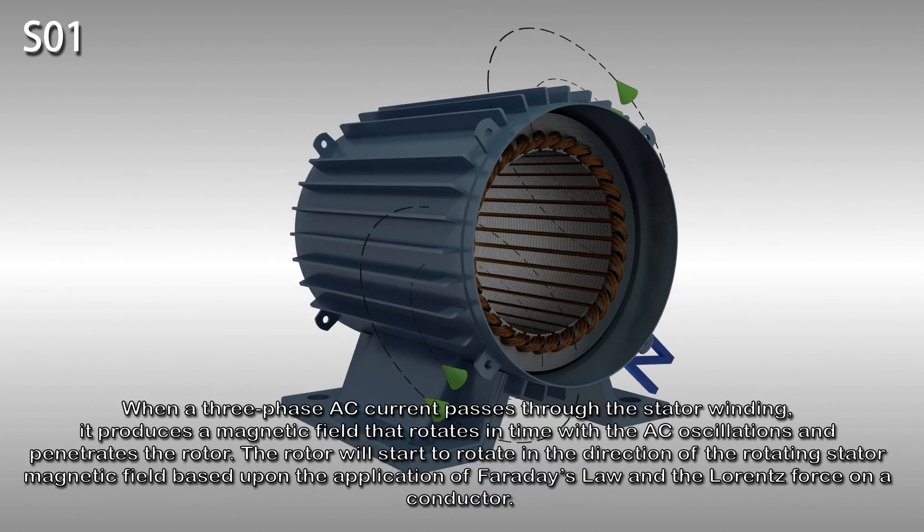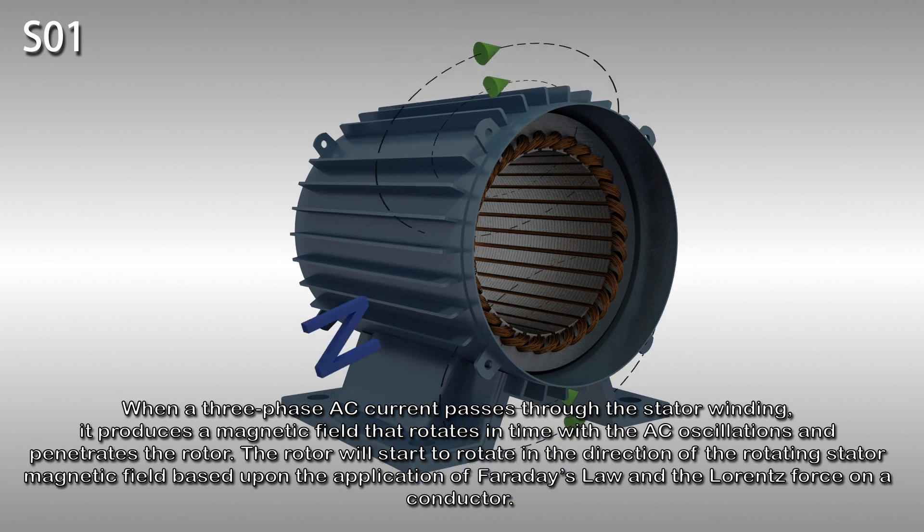When a three-phase AC current passes through the stator winding, it produces a magnetic field that rotates in time with the AC oscillations and penetrates the rotor. The rotor will start to rotate in the direction of the rotating stator magnetic field, based upon the application of Faraday's law and the Lorentz force on a conductor.